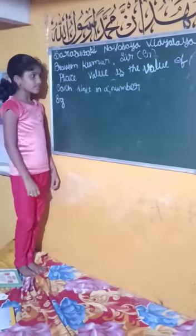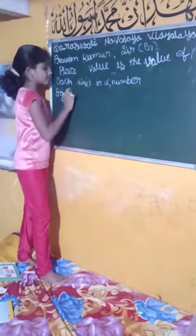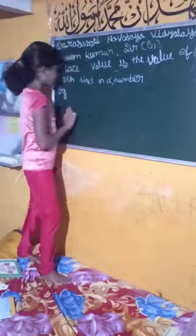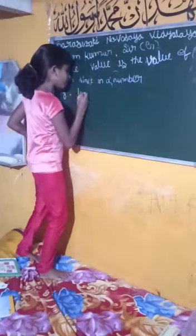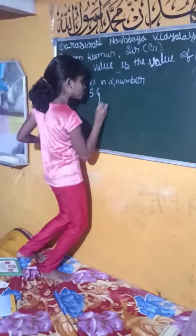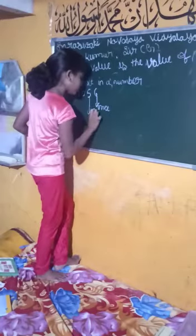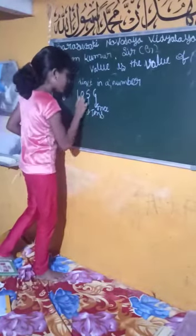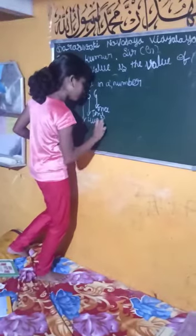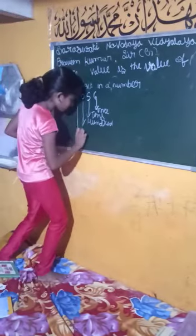What is face value? Face value is the value of each digit in a number. For example, take the number 1056. The digit 6 is in the 1's place, 5 is in the 10's place, 0 is in the 100's place, and 1 is in the 1,000's place.